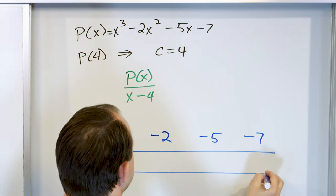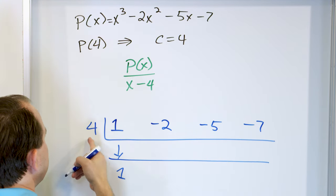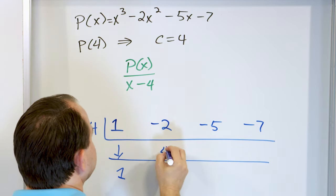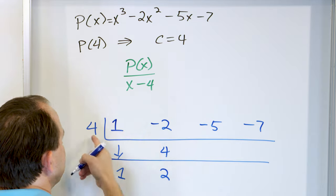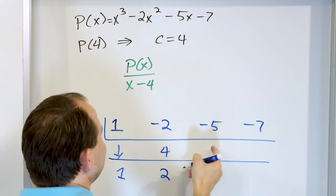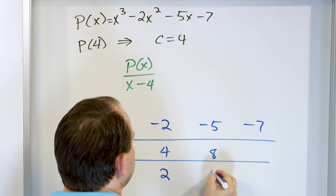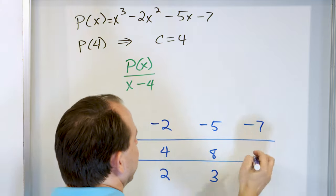For synthetic division I have to switch the sign, making it positive 4. I drop the 1 down. 4 times 1 is 4 — add these together to get 2. 2 times 4 is 8 — add these together to get 3. 3 times 4 is 12.